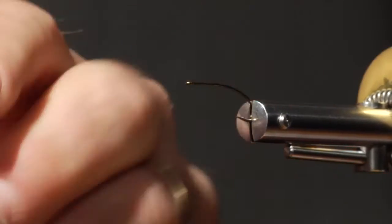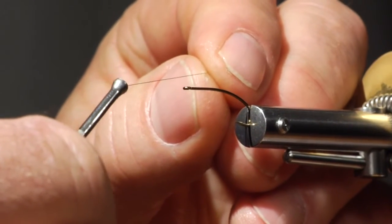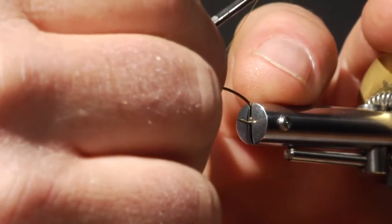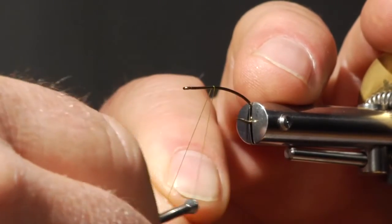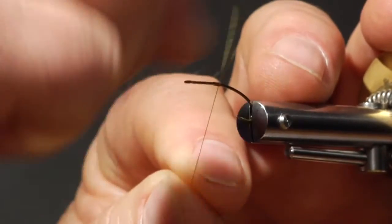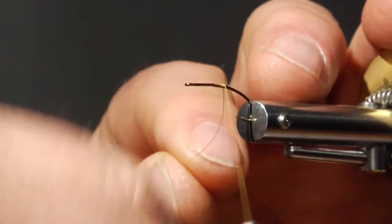We're starting off with an amber Pearsall's gossamer silk thread and I'm going to make a thread base. I'm going to start just a little forward of the halfway mark and wind my way back to the barb of the hook.